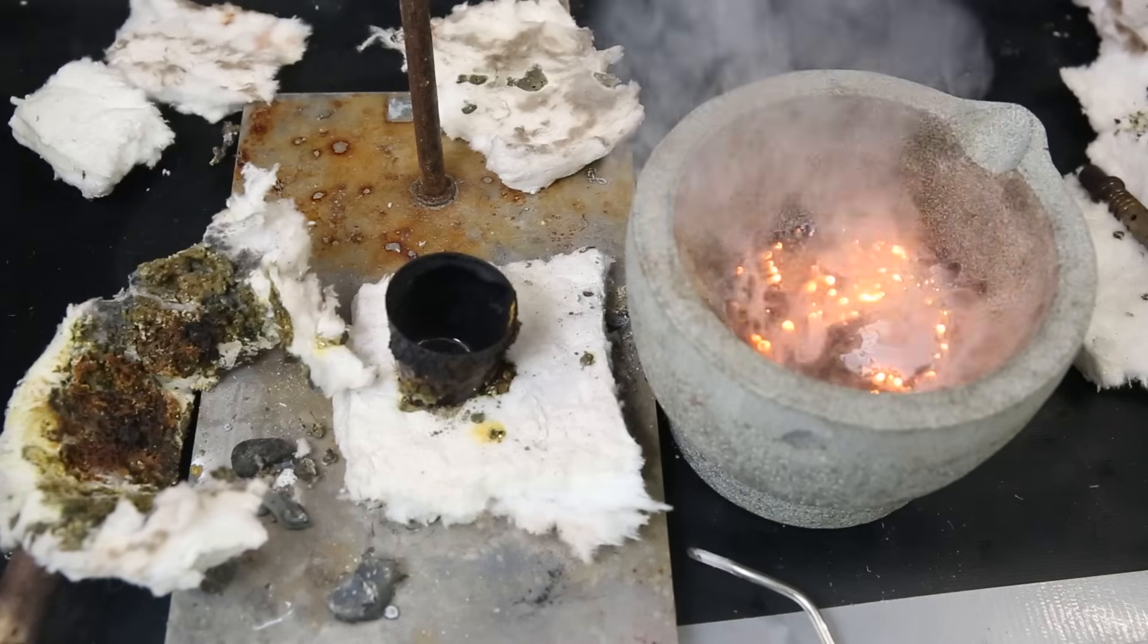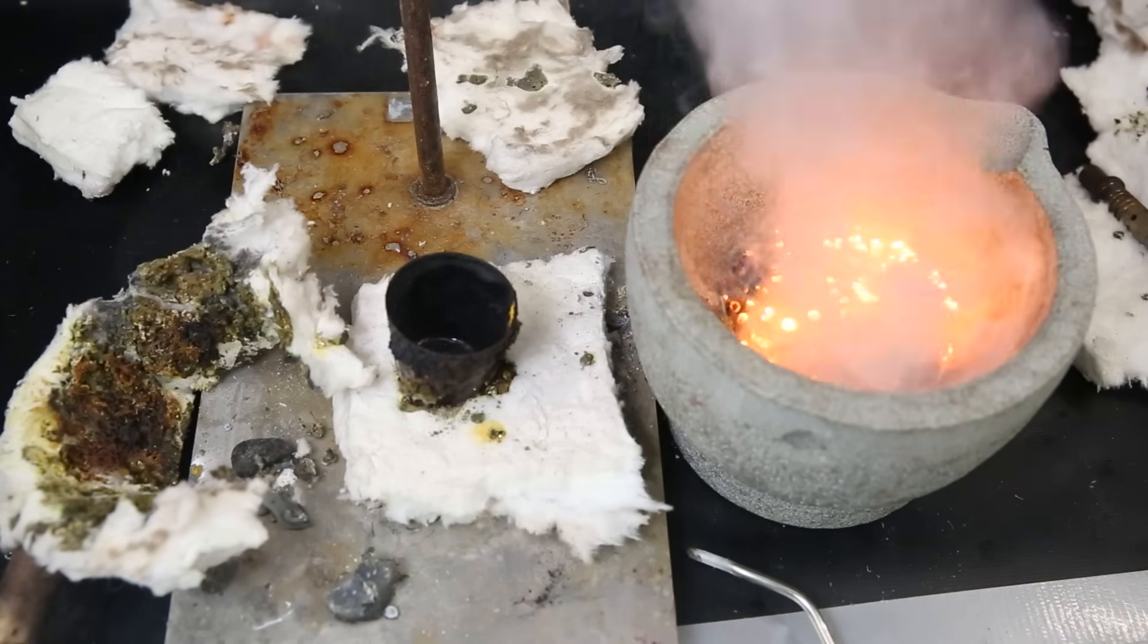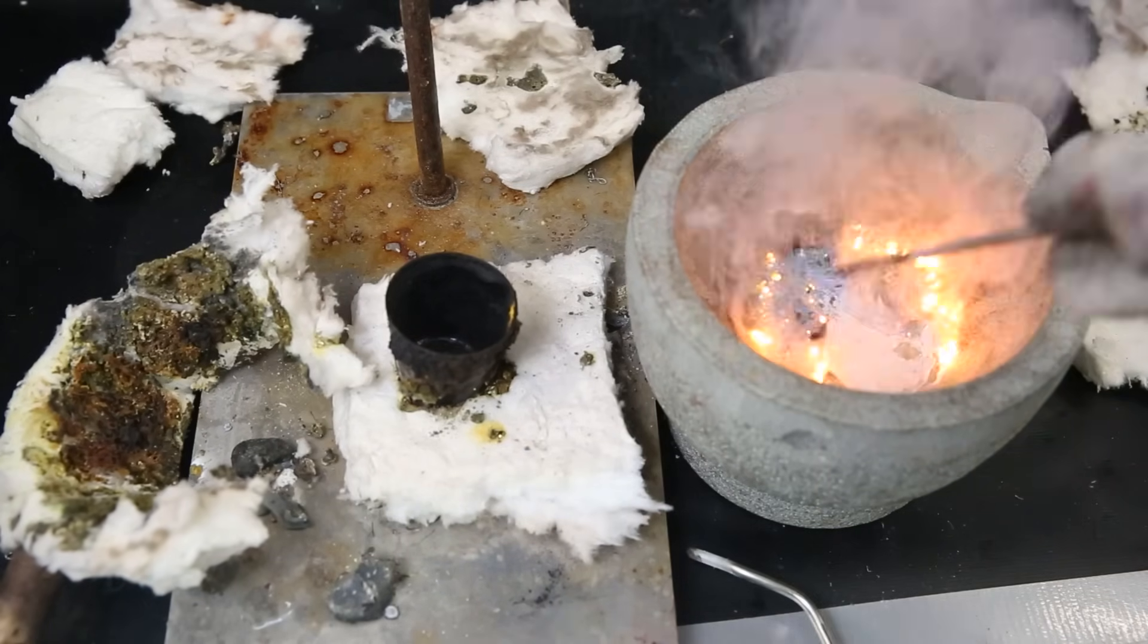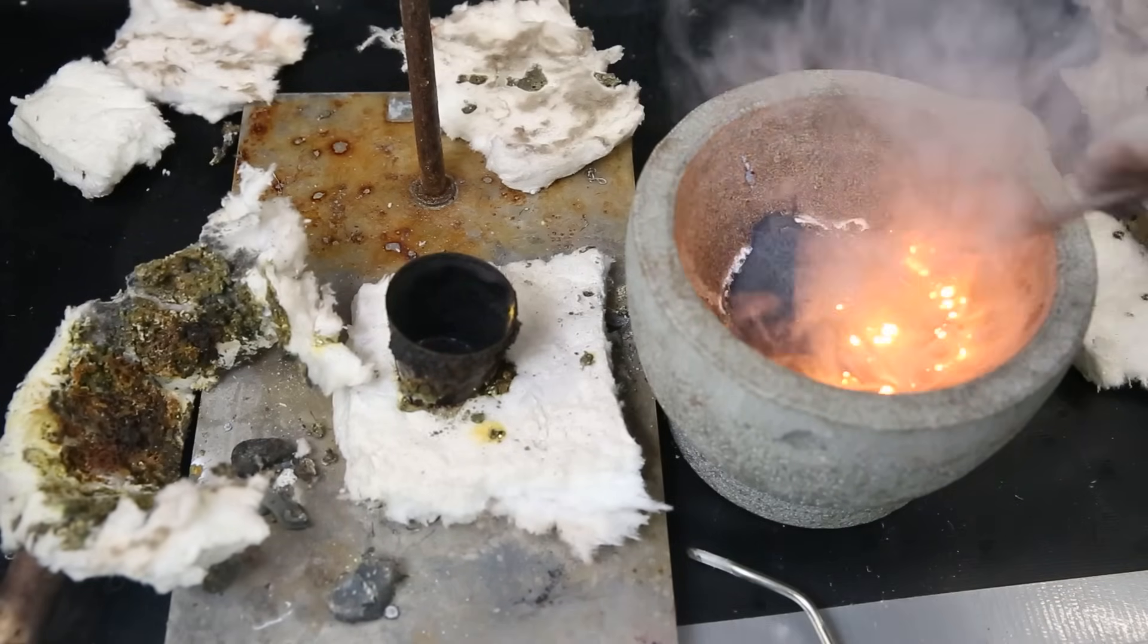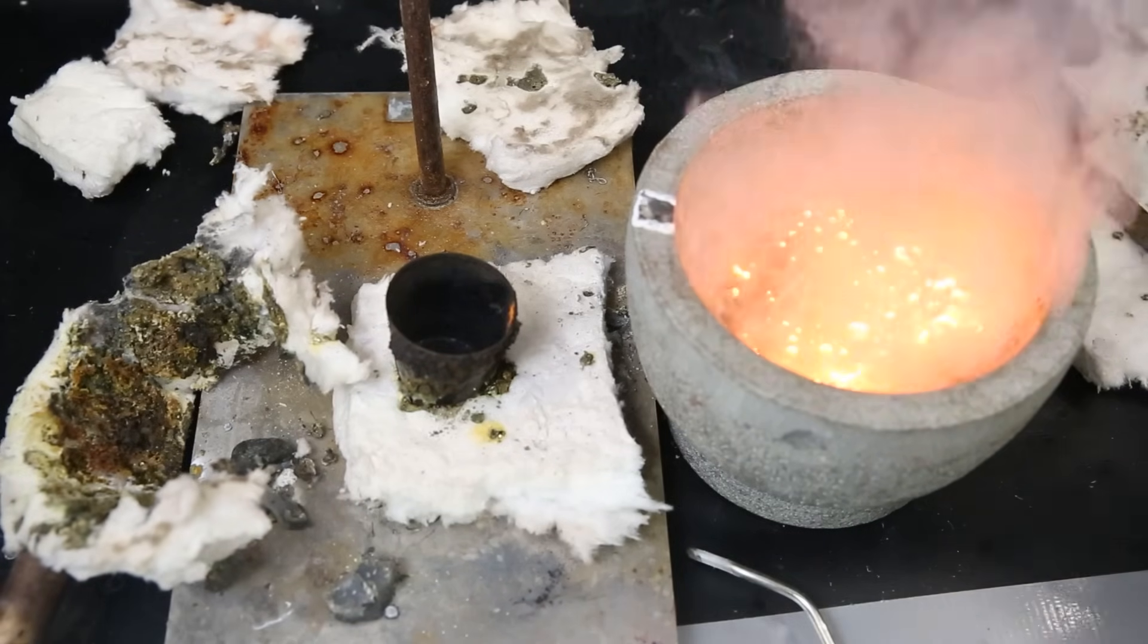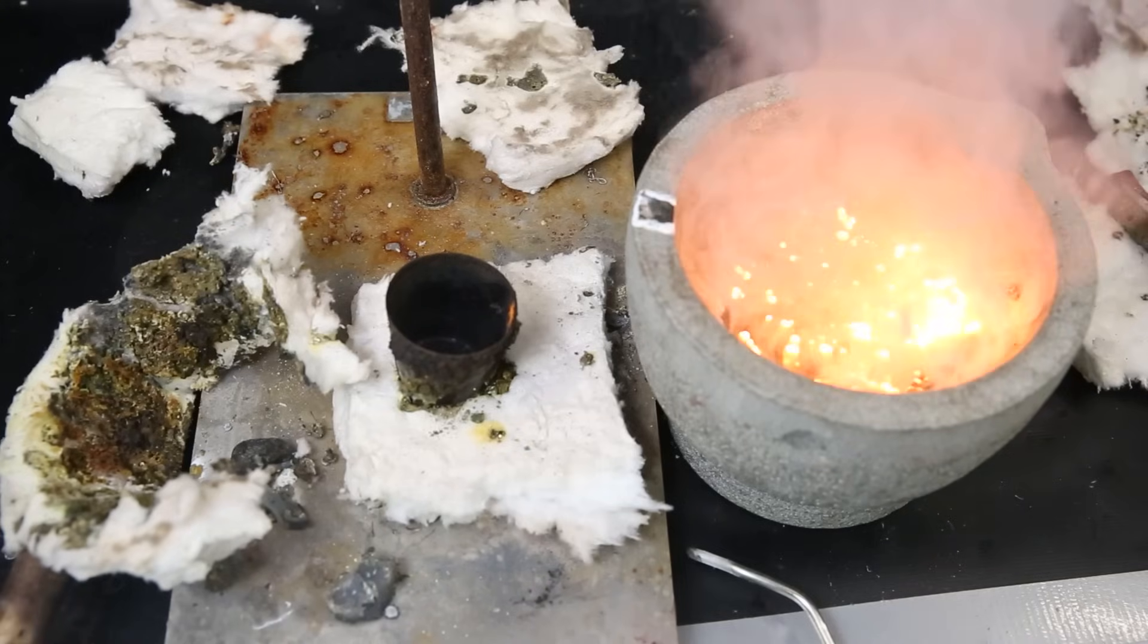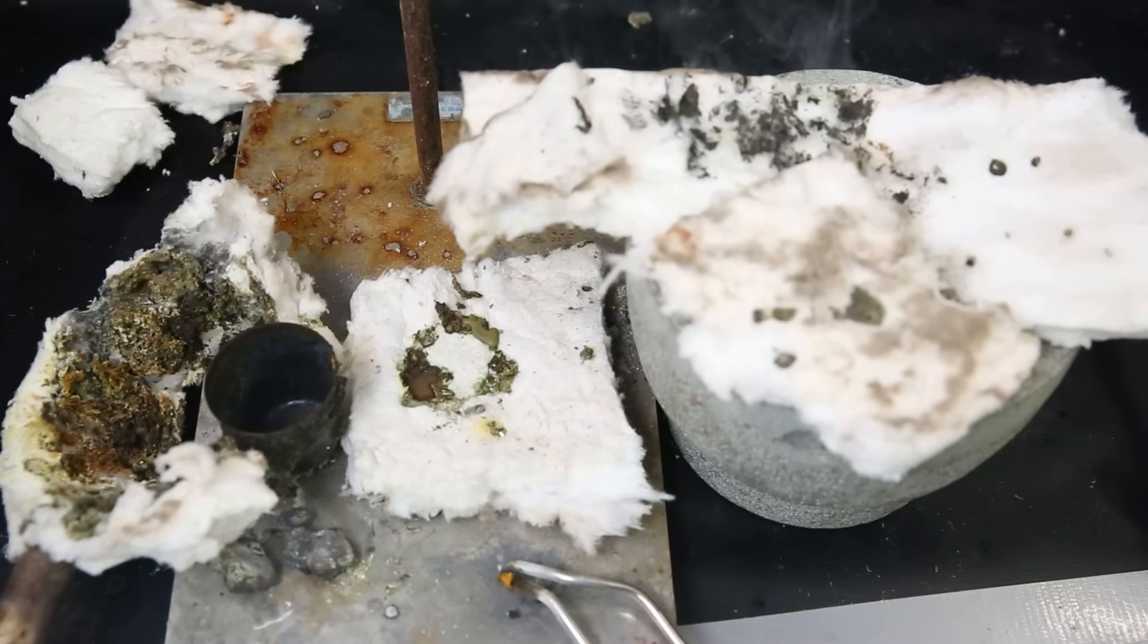There is still some sodium left that I want to dissolve, so I force it into the hot alloy again by mixing it. When that is done, I cover the molten alloy with some mineral wool so that it stops burning in the air. I leave it to cool down and meanwhile prepare for the next step of the synthesis.